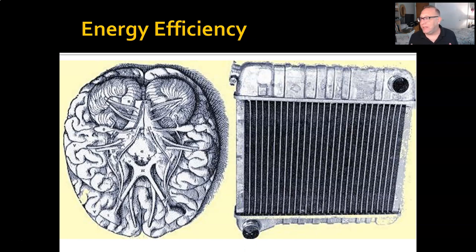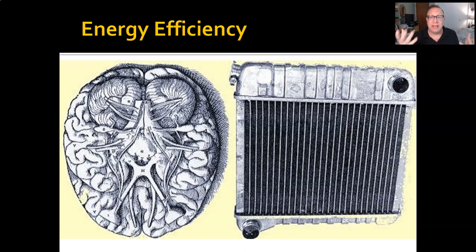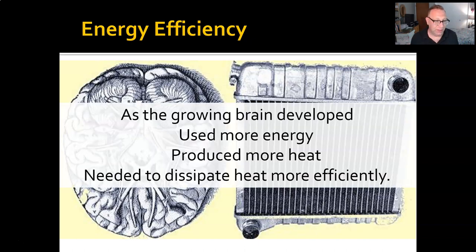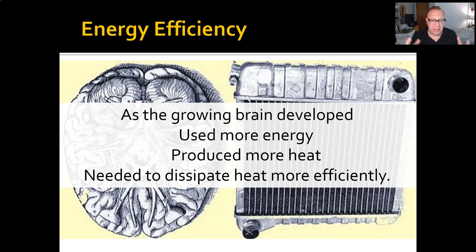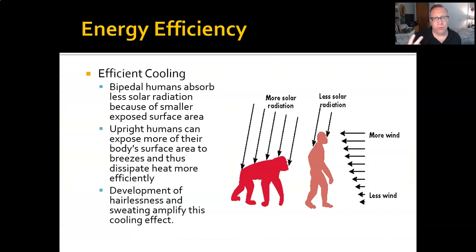Another version of this is called the radiator hypothesis, where it's less about oxygen consumption and more about the efficiency of dissipating the heat that big brains use. As our brains got bigger, not only are they becoming more energy hungry — when they use that energy they release heat, and that heat needs to dissipate more efficiently. Walking bipedally has two advantages in terms of heat dissipation and energy efficiency over walking quadrupedally.